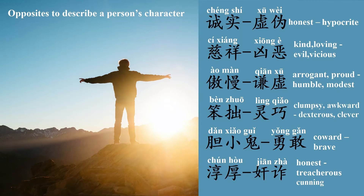傲慢, arrogant, proud. The opposite of 傲慢 is 谦虚, humble, modest. 笨浮, clumsy, awkward.